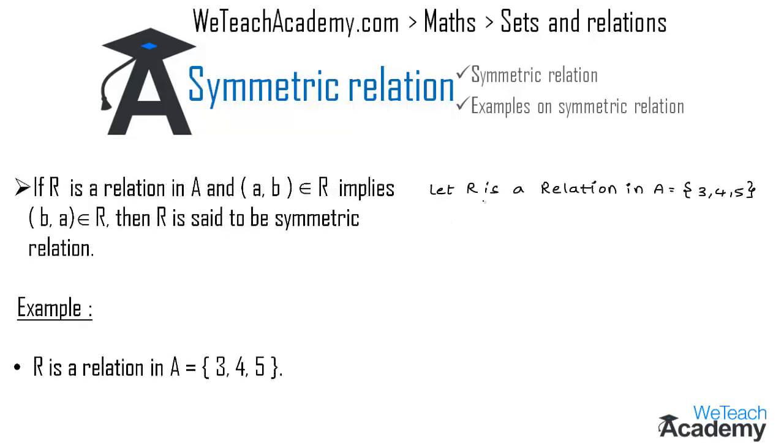Here we have R is a relation in the set A = {3, 4, 5}. Let us write the ordered pairs of R: (3, 3), (3, 4), (4, 5), (4, 4).